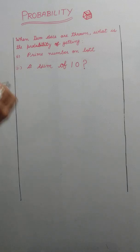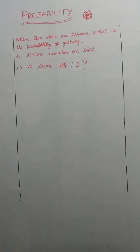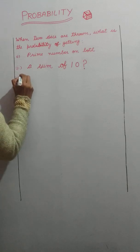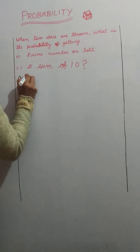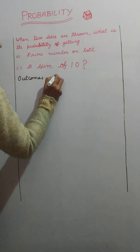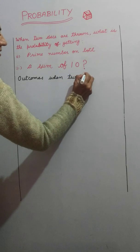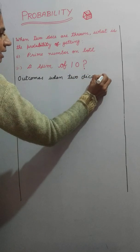When we throw one die, the outcomes are 1, 2, 3, 4, 5, or 6. When two dice are thrown, we need to list all possible outcomes.